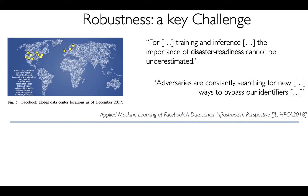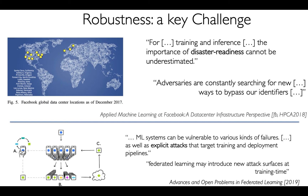First of all, why is robustness an important challenge? A recent report by Facebook indicates that decentralized learning settings are vulnerable to worst-case data and hardware failures, and many times these failures are instigated by adversarial agents that are poisoning the training data. Furthermore, in the recent Federated Learning Tutorial paper, it is highlighted that the decentralized nature of federated learning systems lends themselves to new facets of attacks by adversarial agents.